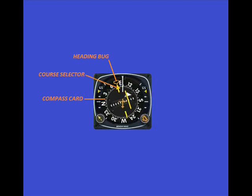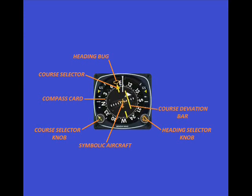The course indicating arrow visually shows the orientation of the selected course relative to your current heading. The course selector knob controls the position of the course indicating arrow. The symbolic aircraft shows your position in relation to the selected course as though you are above the aircraft looking down.